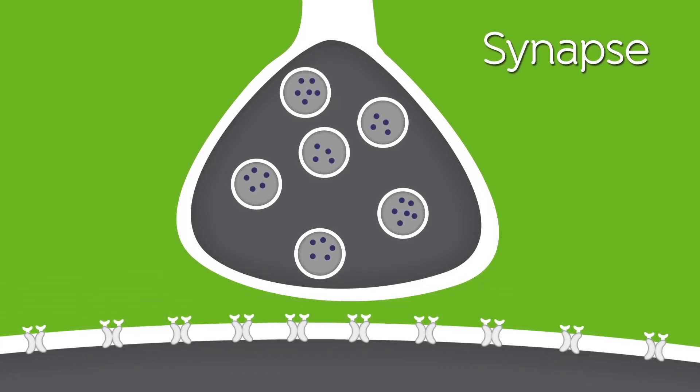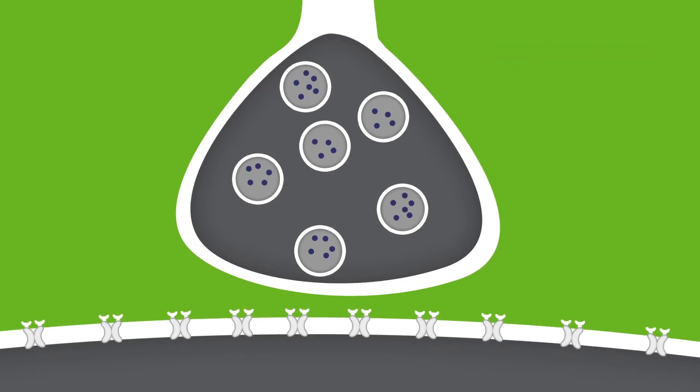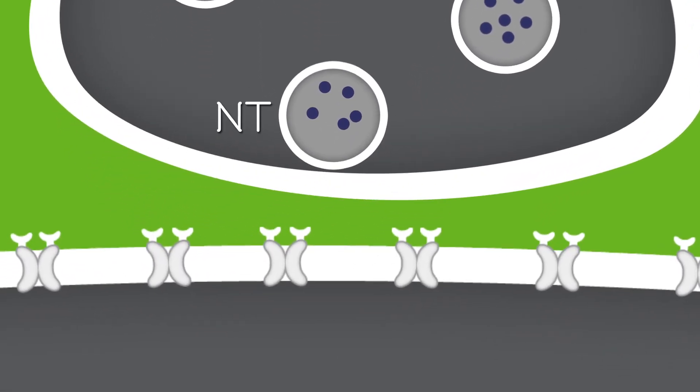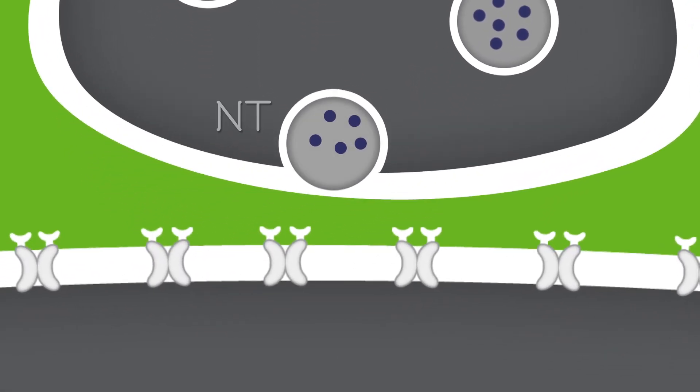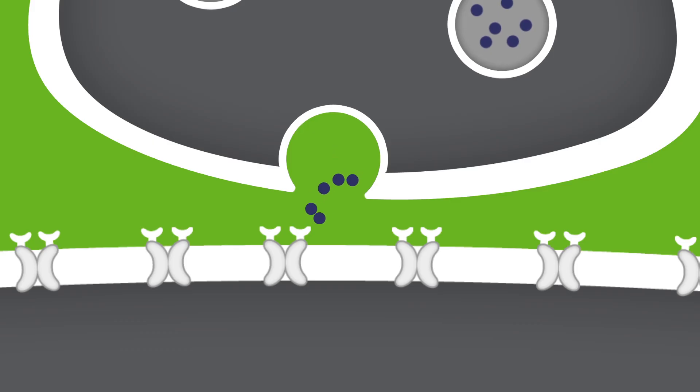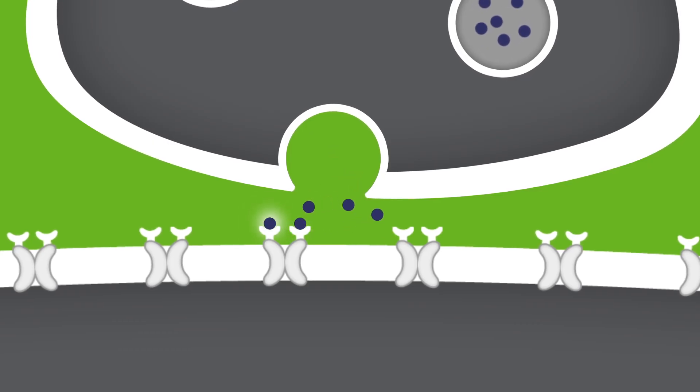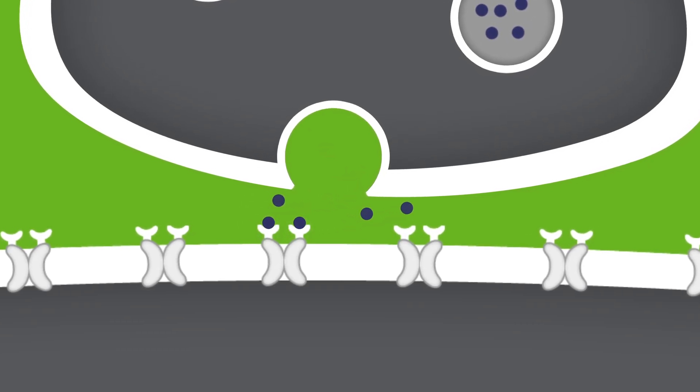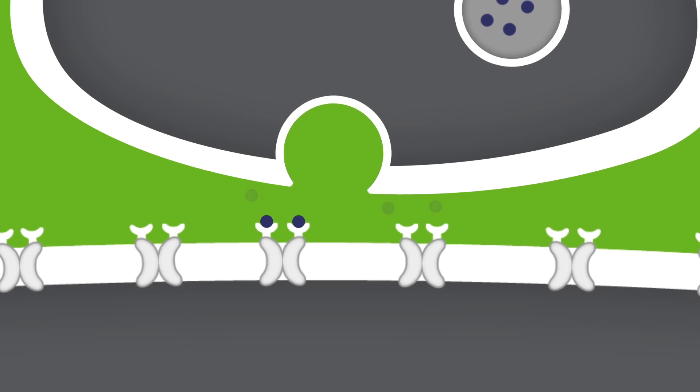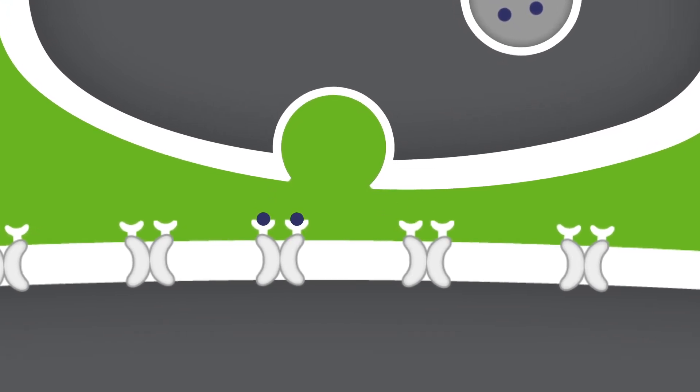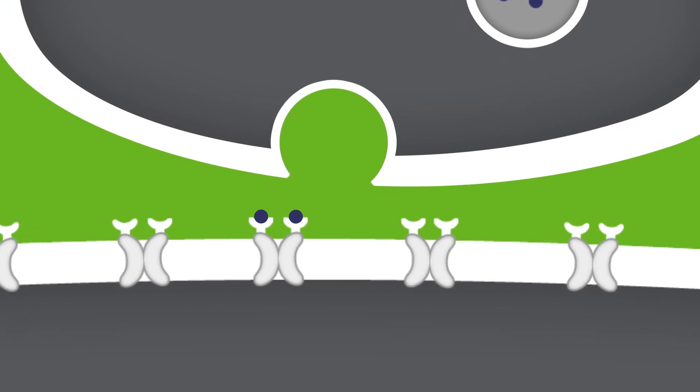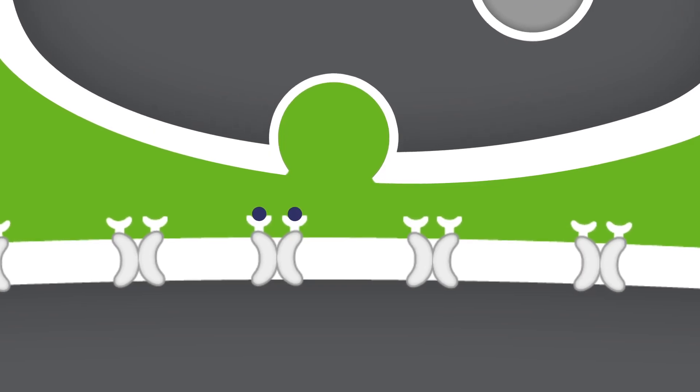When a neuron releases a chemical signal known as a neurotransmitter into the synapse, the chemical will bind to another type of protein embedded in the membrane of the receiving neuron, known as a receptor. Once the neurotransmitter binds to the receptor, much like a key into a lock, this leads to a number of other biochemical events.